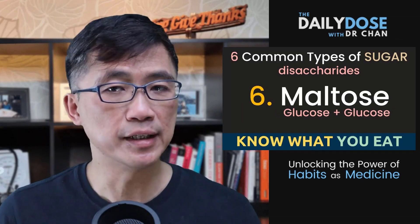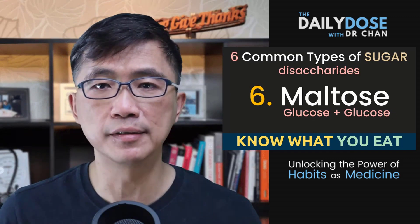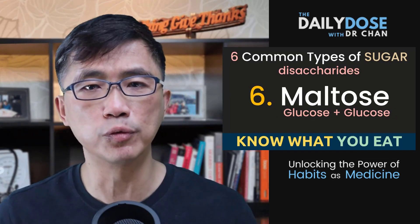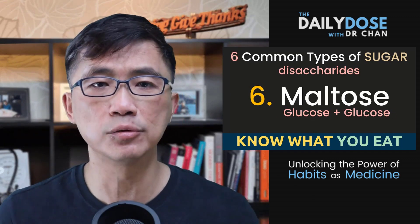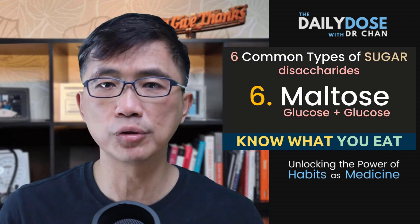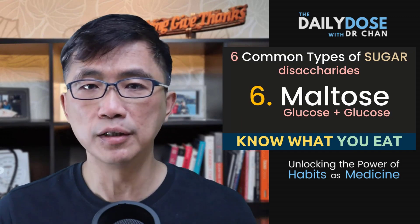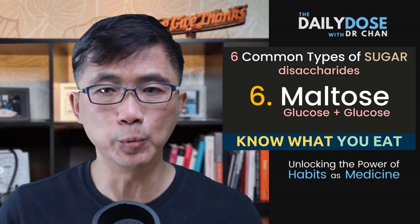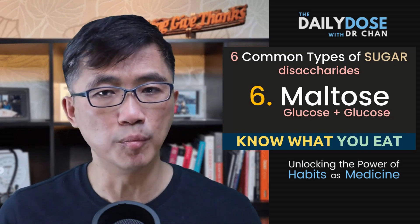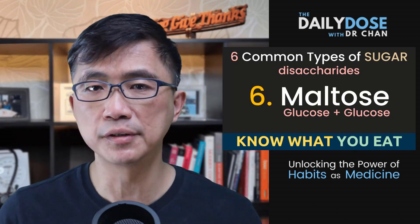Maltose is another common disaccharide in our diet. It is made up of two molecules of glucose linked together. It is often called malt sugar. Common sources of maltose include grains such as wheat and barley, as well as malt or malted food and beverages.